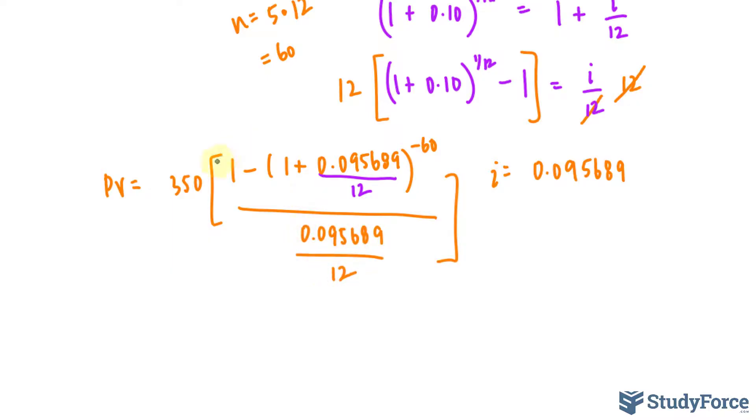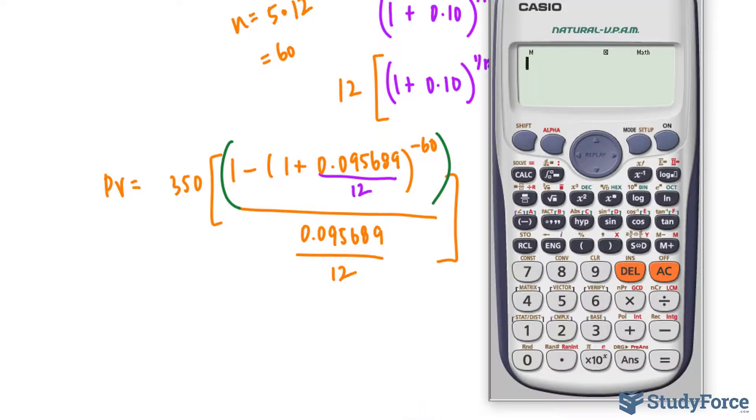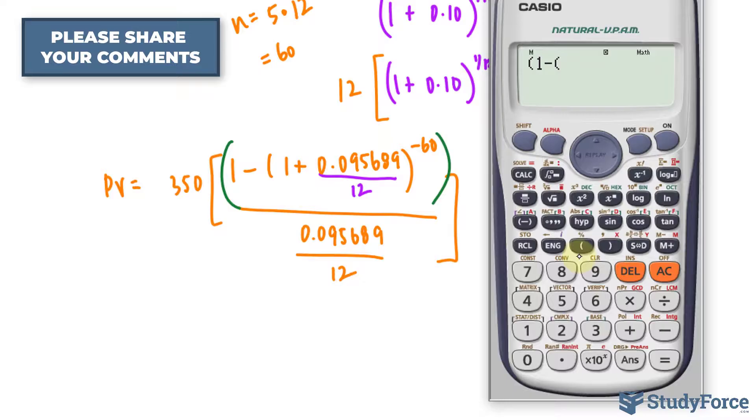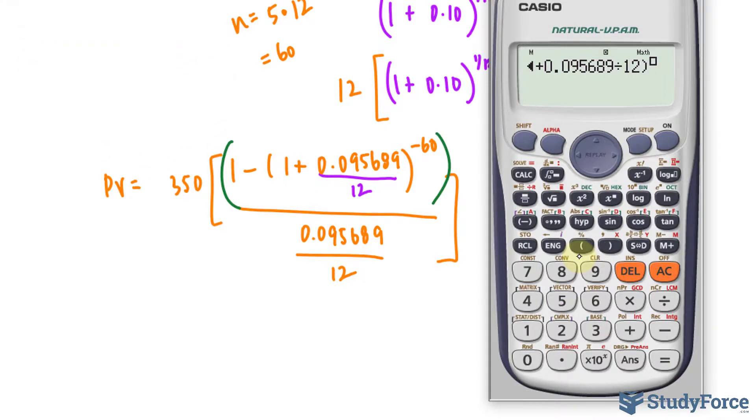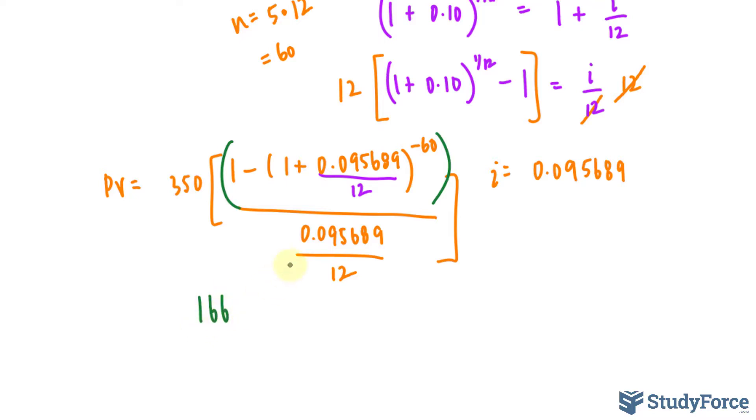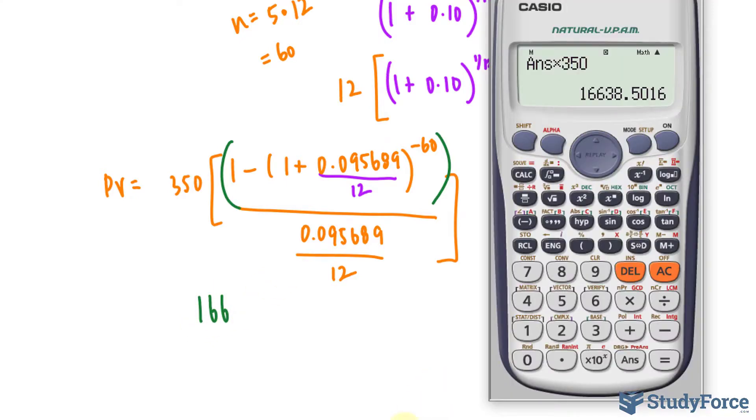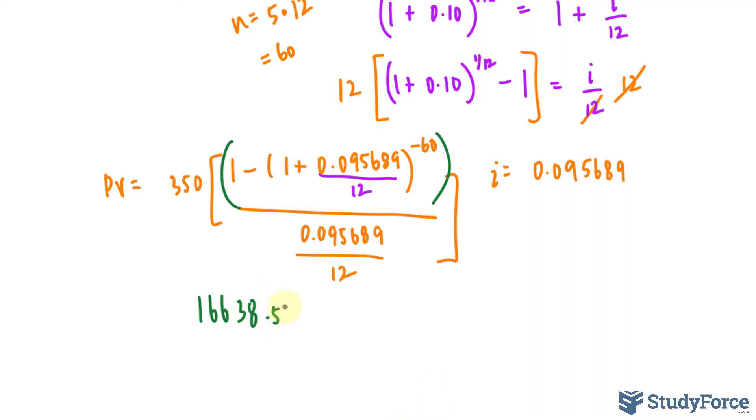Before we use our calculator, make sure that you put parentheses at the top so you can do it all in one shot and don't run into any rounding errors. We end up with the following value, which gets multiplied now to 350, and that gives us $16,638.50.